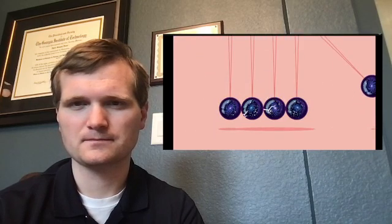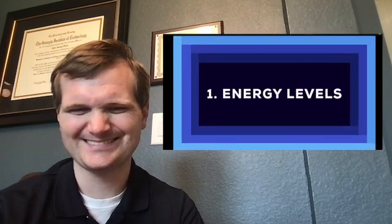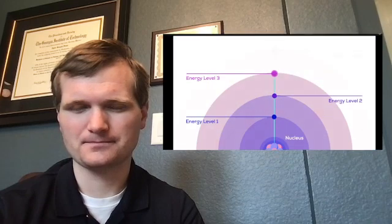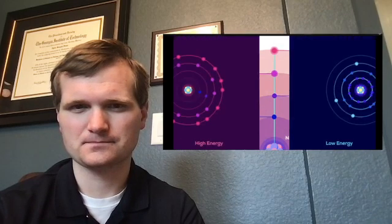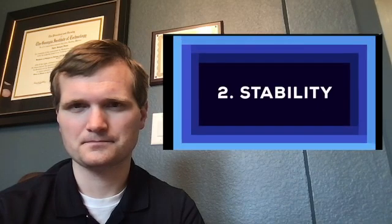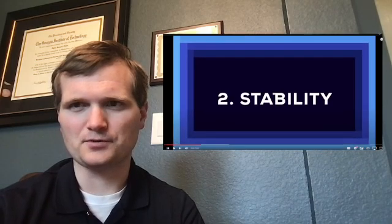To explain how our universe could destroy itself, we need to understand two levels. One: Energy levels. A core idea in physics is that everything has an energy level. The higher the level, the more energy is in the system. Wood, for example, has a high level. It can be burned, a process that releases the chemical energy stored in its molecular bonds and turns it into heat. The ash left over is at a lower energy level than the wood before. Two: Stability.